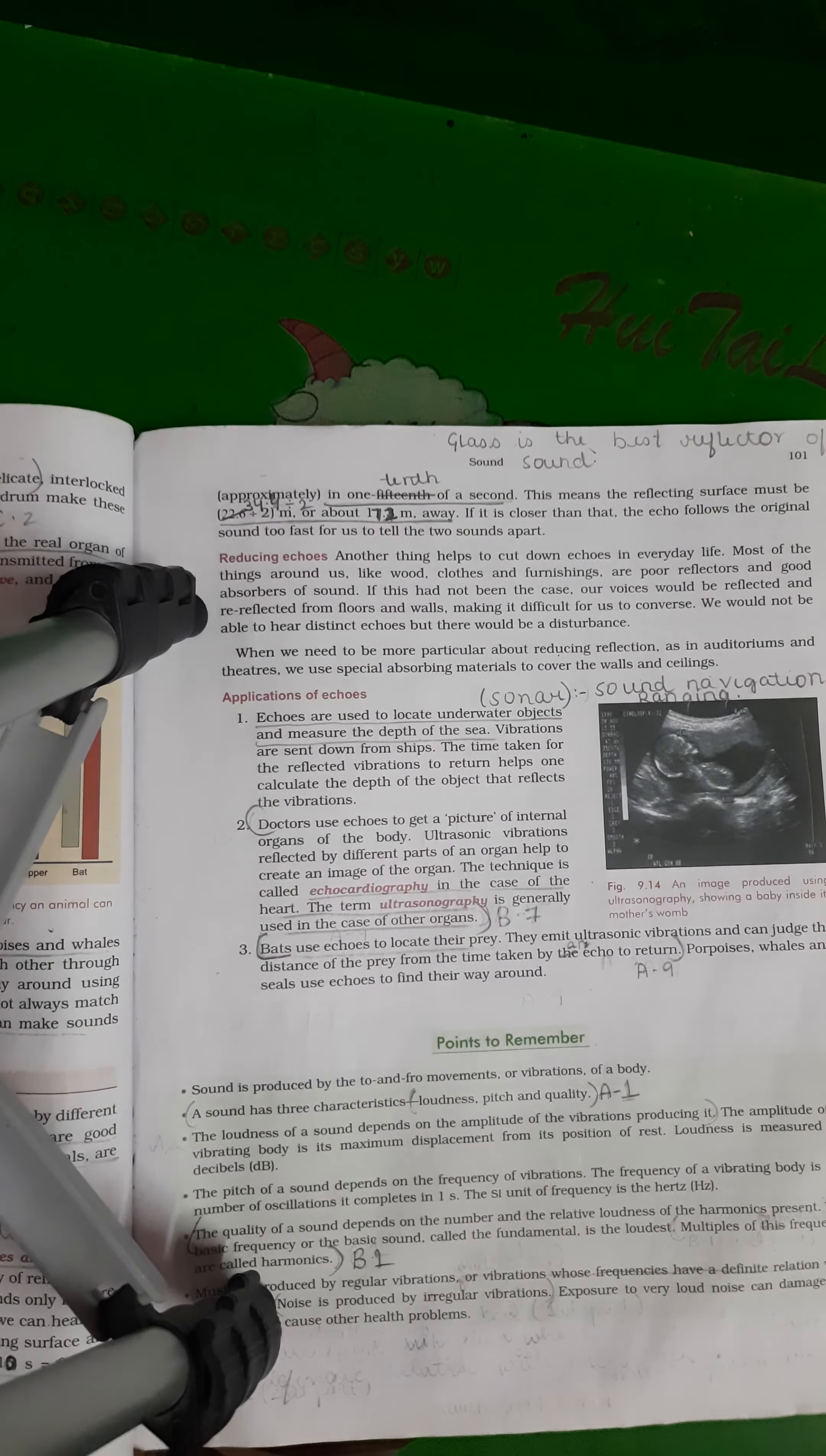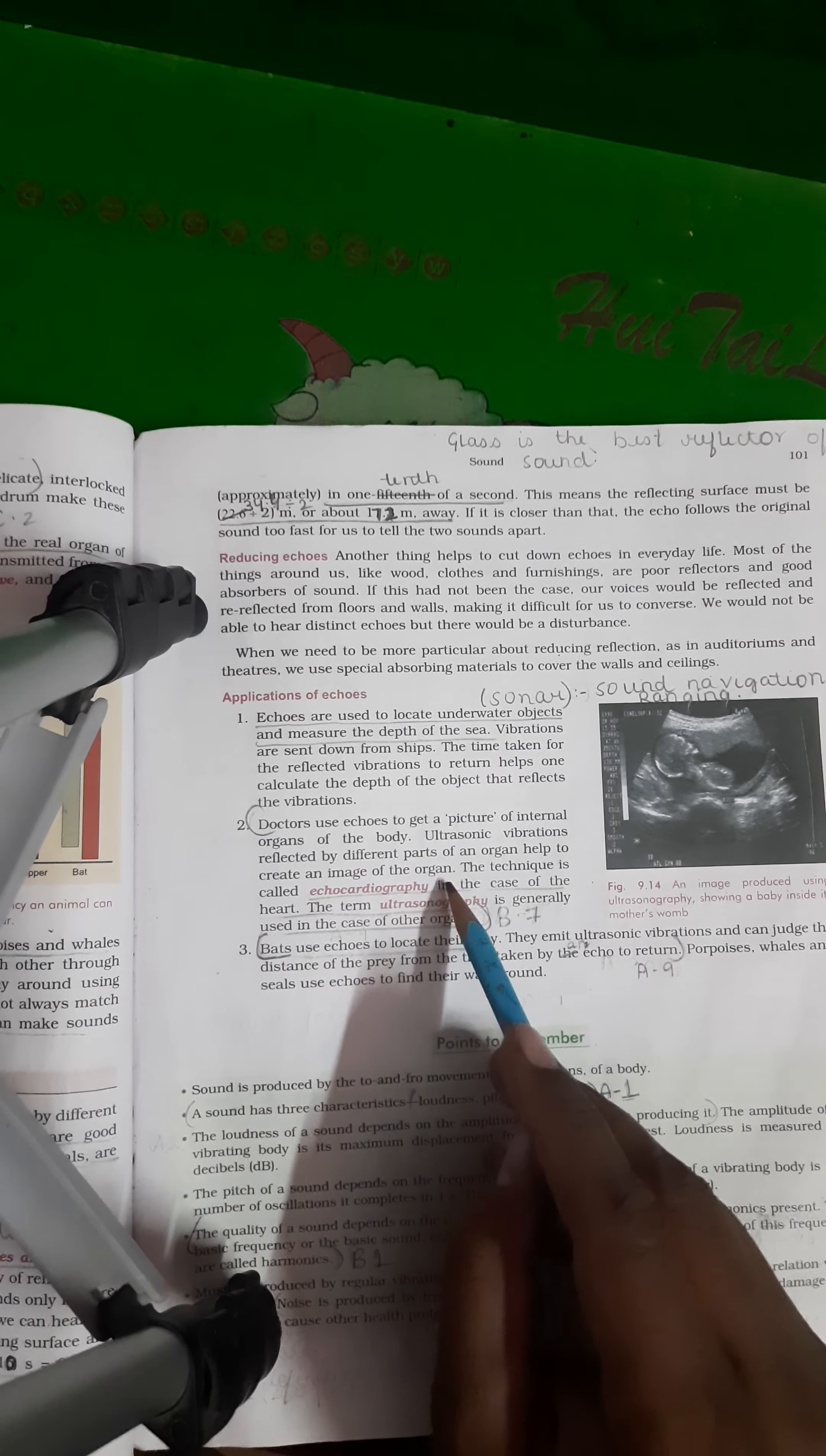Second point. Doctors use echoes to get picture of internal organs of a body. Ultrasonic vibrations reflected by different parts of the organ help to create an image of an organ. This technique is called as echocardiography in case of the heart. The term ultrasonography in general, is generally used in case of other organs. Means with the help of sound, we can make the images of the internal organs of the body.